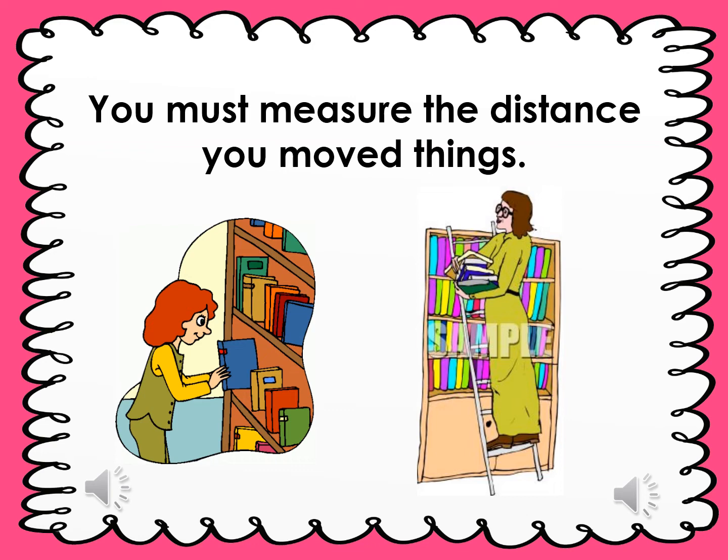The amount of work you do depends on the mass of the object you move. For example, if you push one book on the table, then the work is less. But if you push ten books on the table, then the work is more. So the amount of work you do depends on how far you move an object and how much mass the object has.